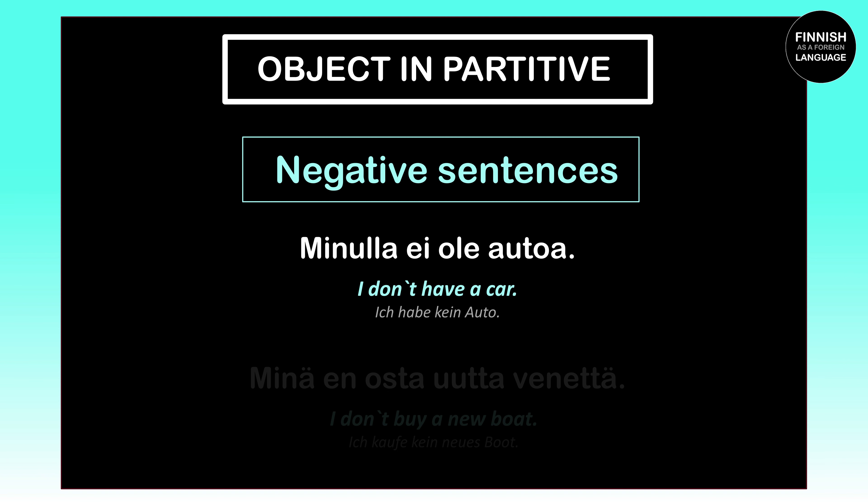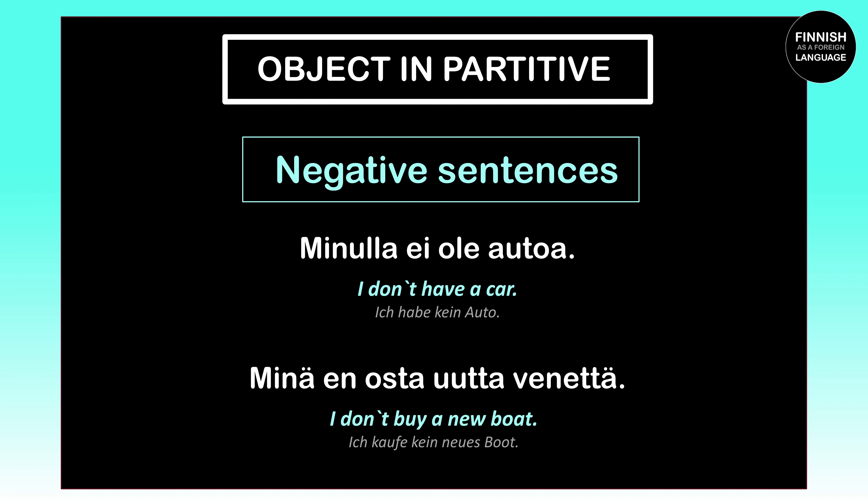Let's take a look at another example. 'Minä en osta uutta venettä' means 'I don't buy a new boat' or 'I'm not going to buy a new boat.' Our object here is the boat, which is 'vene' in Finnish. Because we also have a negative sentence, we have to put our object into the partitive case, which is why 'vene' becomes 'venettä.' We also have the word 'uutta,' which is the partitive case of 'uusi,' meaning 'new,' because it refers to the boat in a negative sentence.